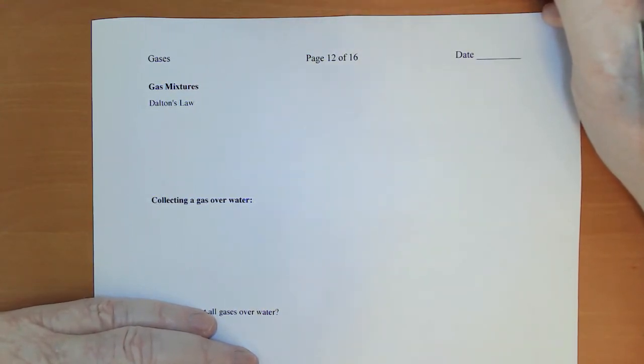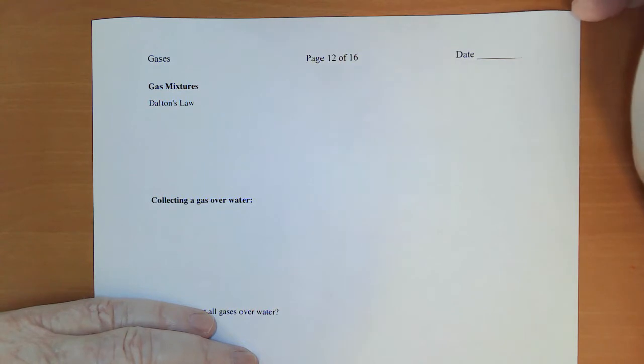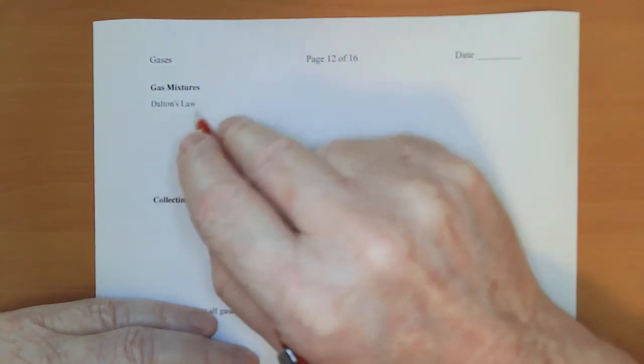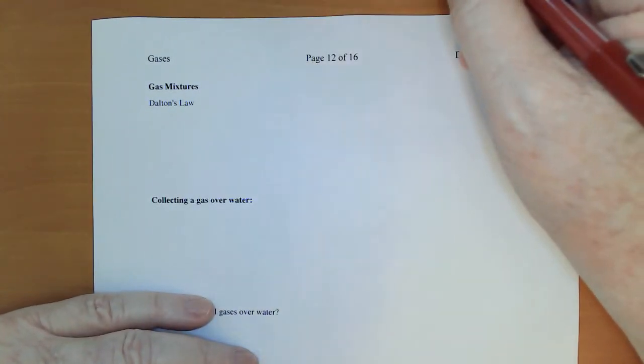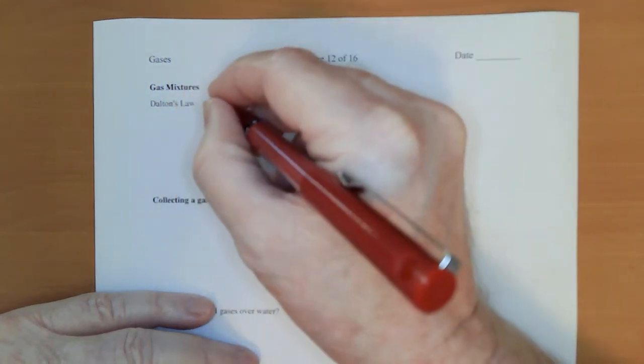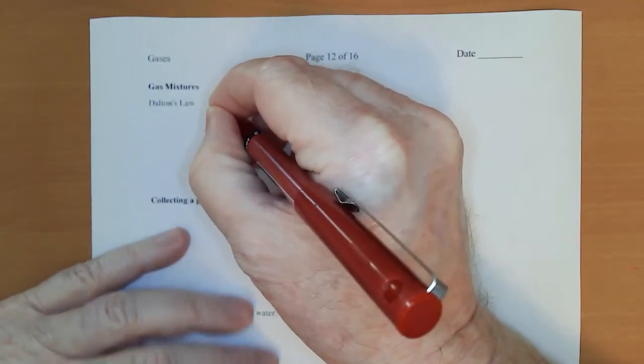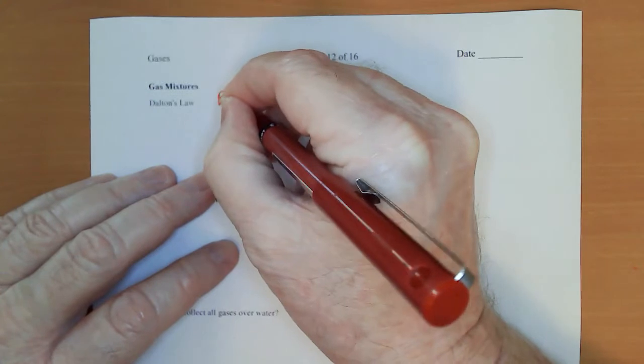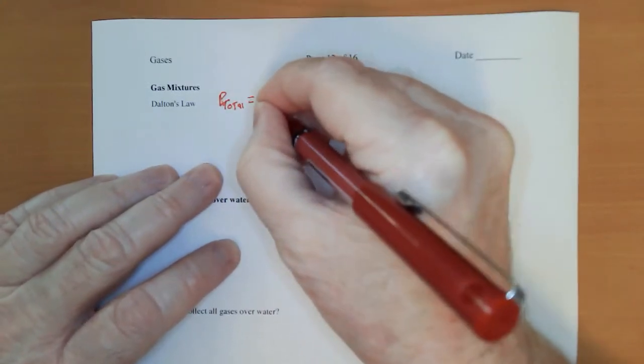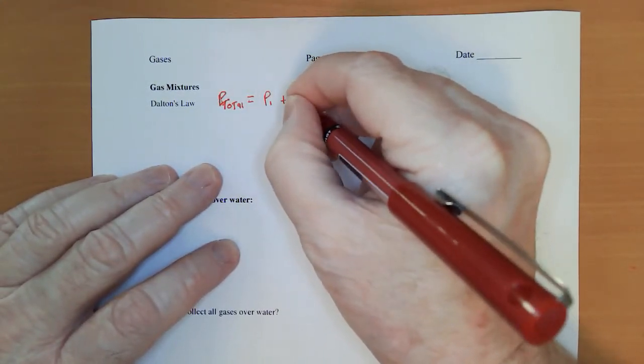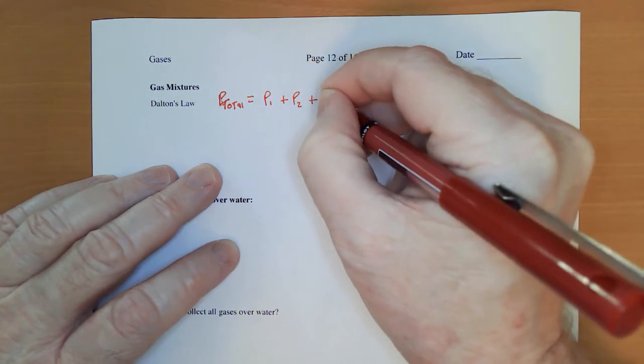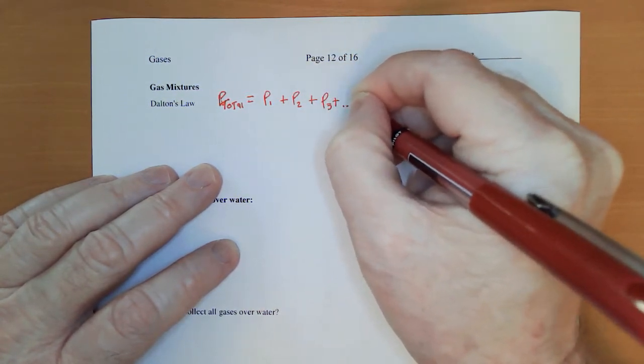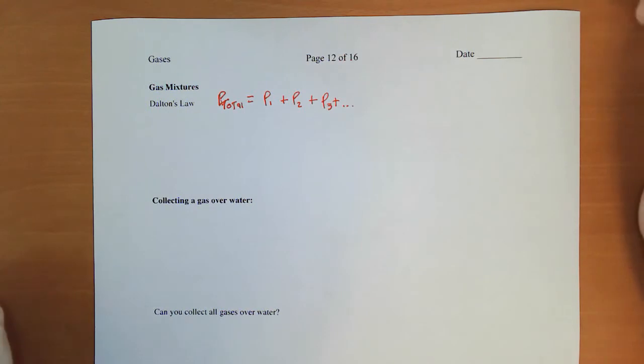We need ways to deal with mixtures of gases, and John Dalton has given us a good way of dealing with that. Dalton's law says that the total pressure P_total exerted by a gas is the pressure of the first gas added to the pressure of the second gas added to the pressure of the third gas, et cetera.